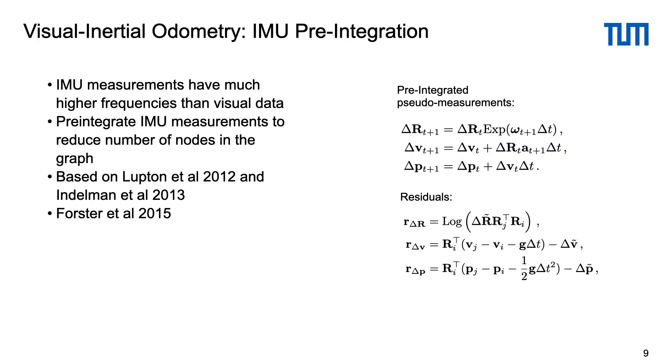To combine short-term vision information with the IMU measurements we follow the approach proposed by Lupton et al. We combine several consecutive measurements together into pre-integrated pseudo measurement and include it into the optimization. This way we can reduce the size of the optimization problem.